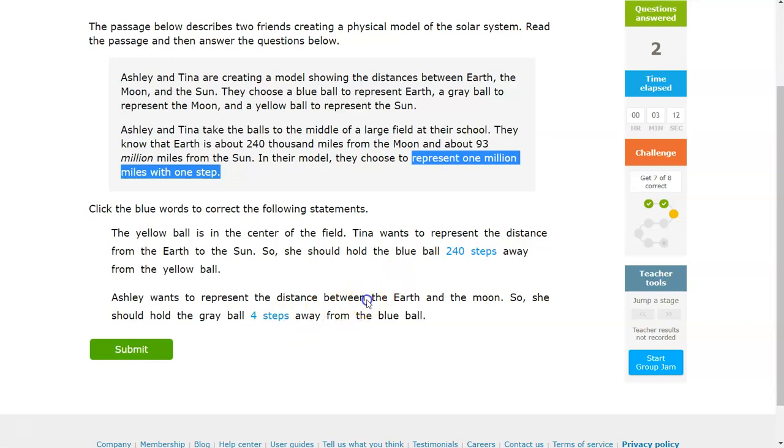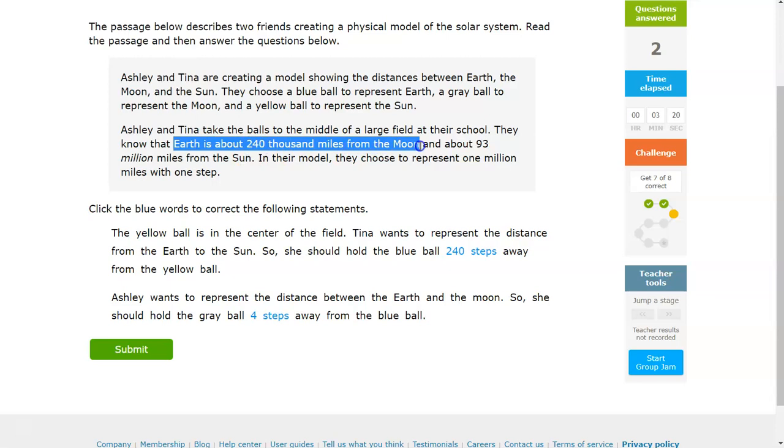Once again, in this particular part of the question, we're actually looking at the fact that Earth is 240,000 miles away, which is a lot smaller than 93,000,000 miles.